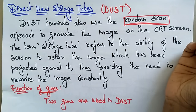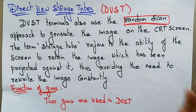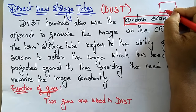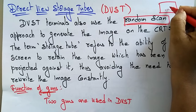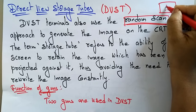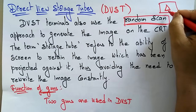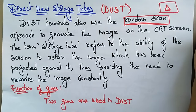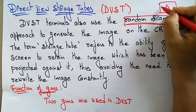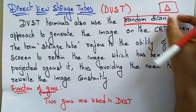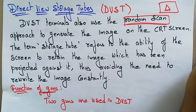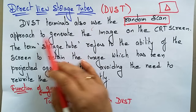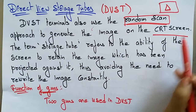In random scan, on the screen, wherever it wants to print, only those lines will be scanned and the electron beam will be directly ejected into that portion. It won't scan the complete screen. In raster scan, the electron beam has to scan the complete screen, but in random scan only the required portion of the screen is scanned.